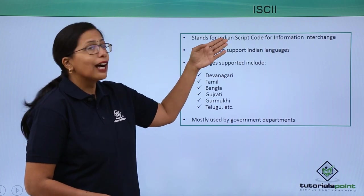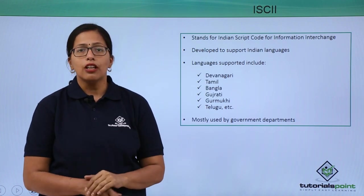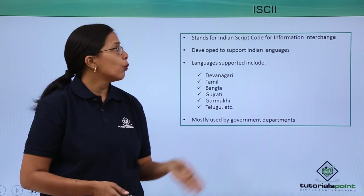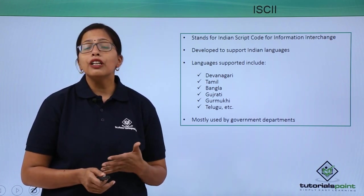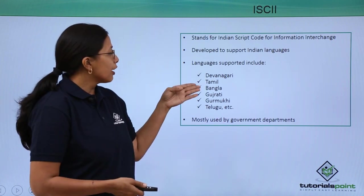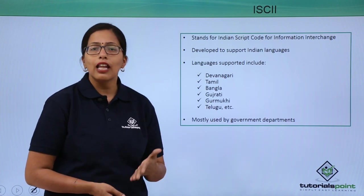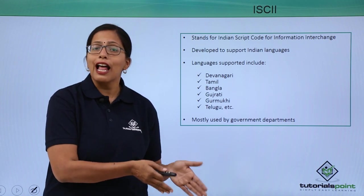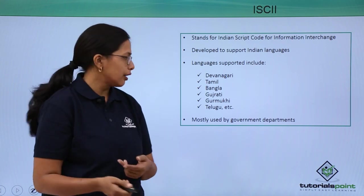We also have ISCII — Indian Script Code for Information Interchange. You might ask: if ASCII is already there and universally accepted, why do we need an ISCII? Because ASCII will not support the characters of our own languages — Devanagari, Tamil, Bangla, Gujarati, Gurmukhi, Telugu, and many others. They have their own characters that also need to be represented as alphanumeric code, otherwise we would only be able to use English characters.